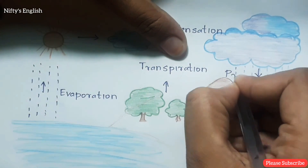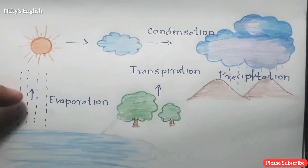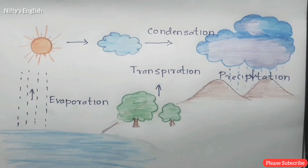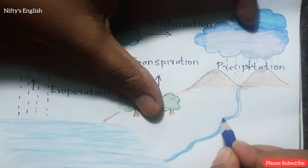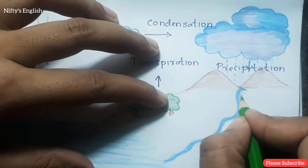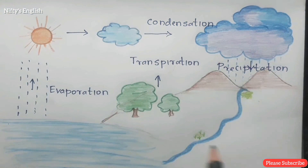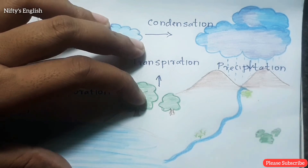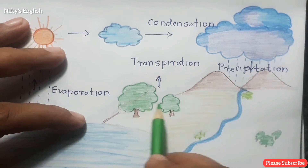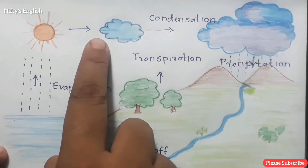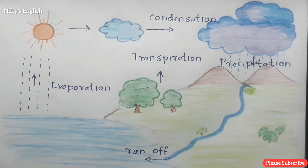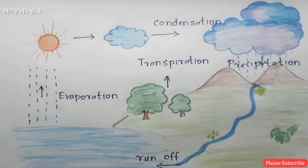Evaporation, condensation, and precipitation are important parts of the water cycle, however they are not the only ones. Other processes of the water cycle are transpiration and runoff. Runoff describes a variety of ways liquid water moves across land. Snow melt, for example, is an important type of runoff produced as snow or glaciers melt and form streams or pools. The full cycle is: evaporation, transpiration, condensation, precipitation, and runoff.